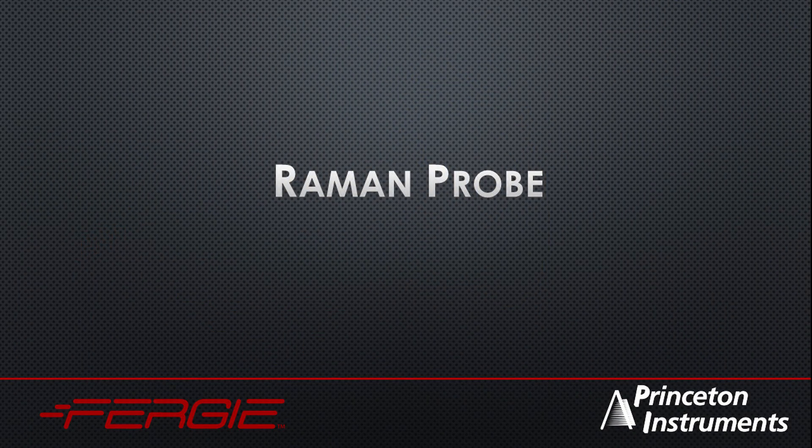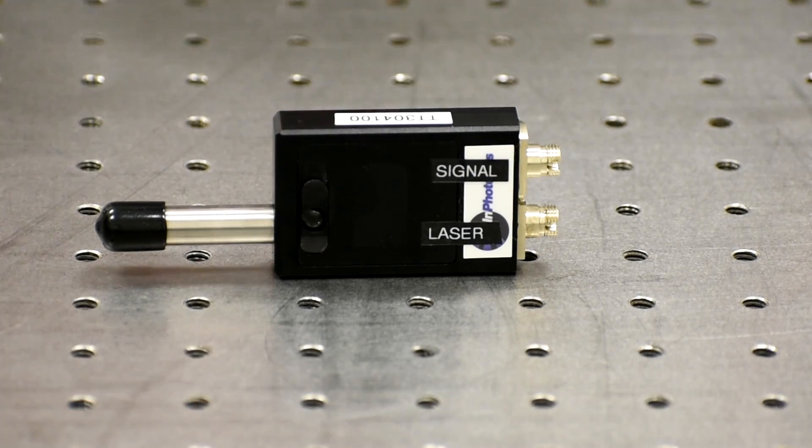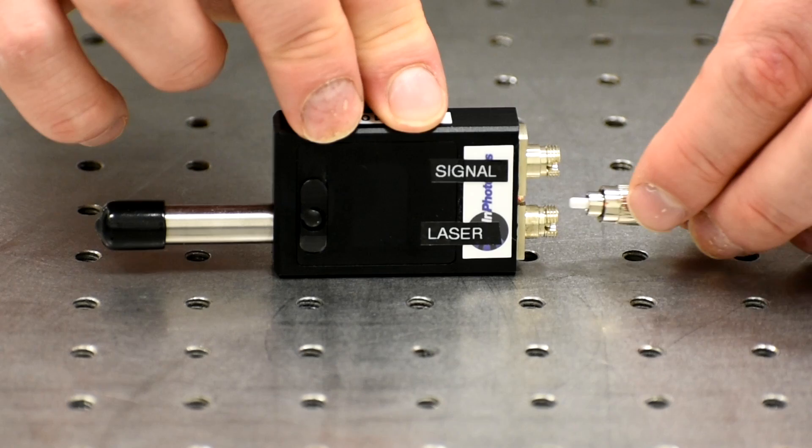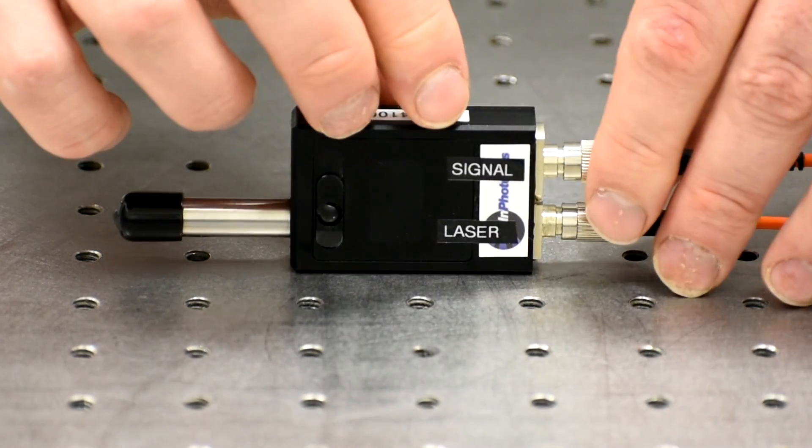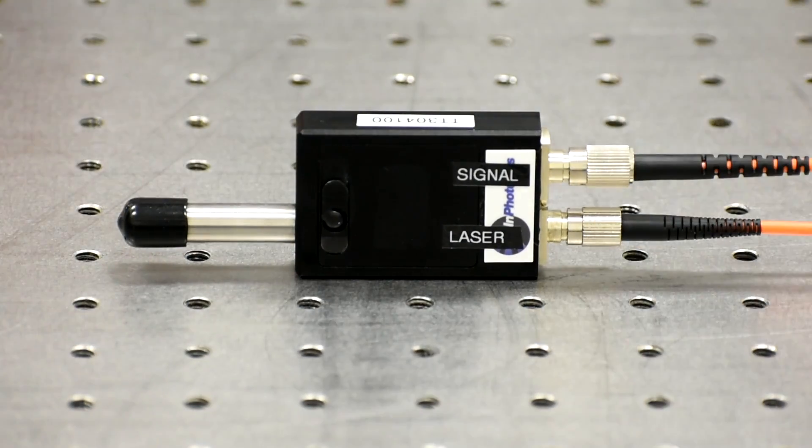Let's set up a Raman experiment with the fiber coupled Raman probe. Connect a fiber or fiber bundle from Fergie to the signal port of the probe. Then connect the fiber from the laser to the second input port.